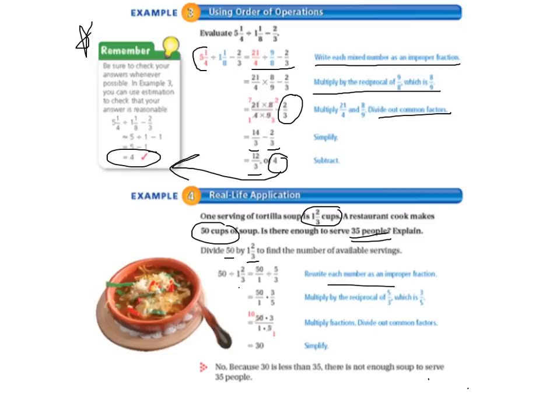We rewrote everything as an improper fraction and then we're going to multiply by the reciprocal of 5/3 and when we do that we divide out the common factors. 5 goes into 50 ten times. We can't do anything with the 1 and the 3. 10 times 3 is 30 and 1 times 1 is 1. Nothing to simplify but we have 30 servings. 30 is less than the 35 that we want. There's not enough soup to serve 35 people so we need to make more soup or not invite so many people.